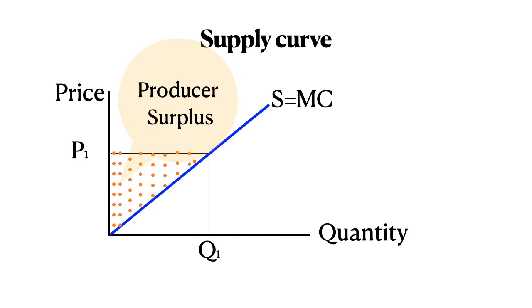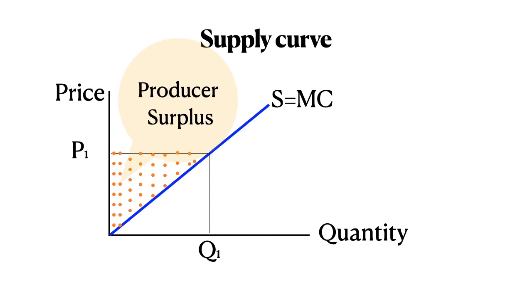Producer surplus depends, of course, on the supply curve, but it also depends on the price. And if we had a higher price, the producers would be willing to sell more, a higher quantity. So shown here is the increase from P1 to P2, an increase in Q1 to Q2.